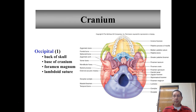Next we have the occipital bone, which is the purple colored bone you can see in the picture. It's the back of the skull and the base of the cranium. It contains a large opening through which the spinal cord connects to the brain stem, called the foramen magnum. It's connected to the temporal bones by the lambdoid suture.